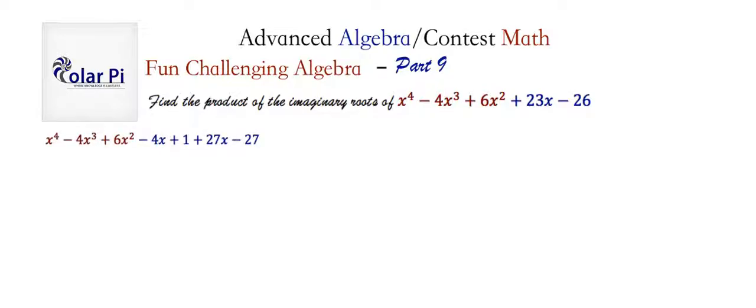What I'm saying is let's rewrite our quartic in this way, which is a mere rewriting of the quartic. It doesn't change the actual quartic we're working with, right? Because -4x + 27x make 23x, and then 1 - 27 make -26. So I didn't do anything but rewrite the last two terms as four terms here.